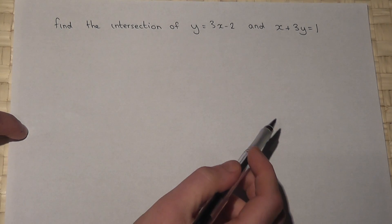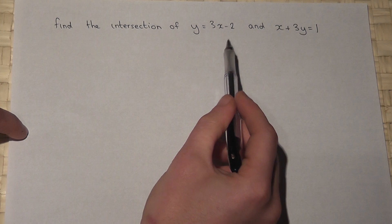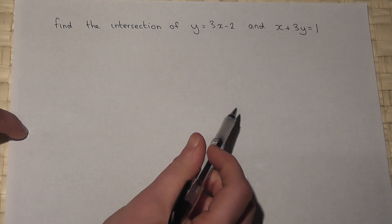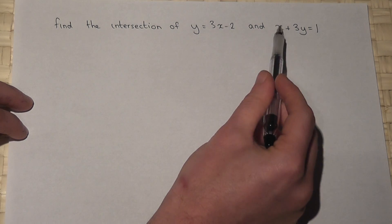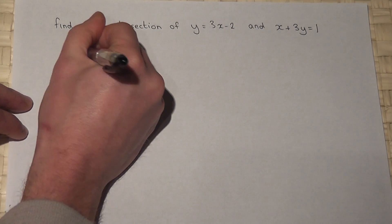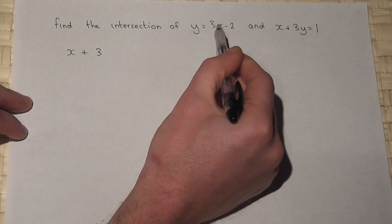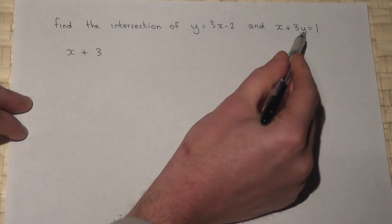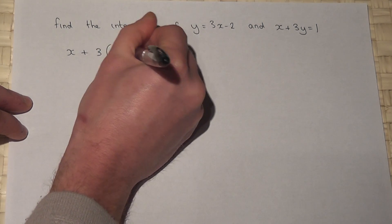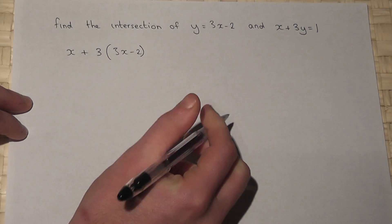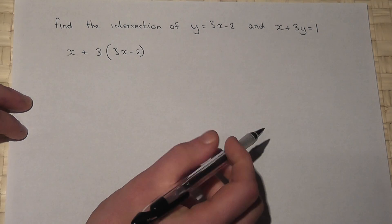This question asks us to find the points of intersection between two lines. I know that y equals 3x minus 2, so if I look at the second equation, I've got x plus 3y. I can substitute 3x minus 2 in place of y, giving bracket 3x minus 2, since y equals 3x minus 2 where the lines intersect.